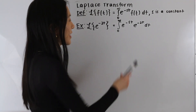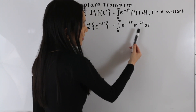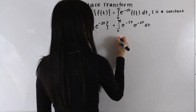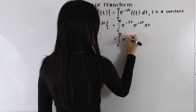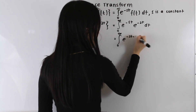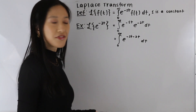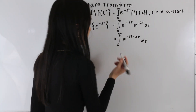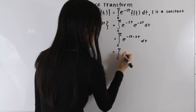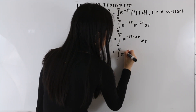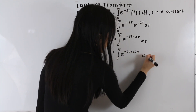Here, because we have a common base and two exponential functions multiplied together, we can add the powers together. So we end up with the integral from zero to infinity of e to the negative st minus 2t dt. Let's go ahead and factor out a negative sign and a t from the power, so we have the integral from zero to infinity of e to the negative s plus 2 times t dt.